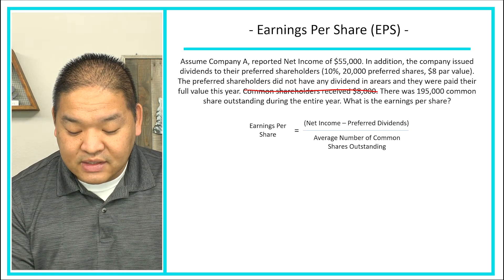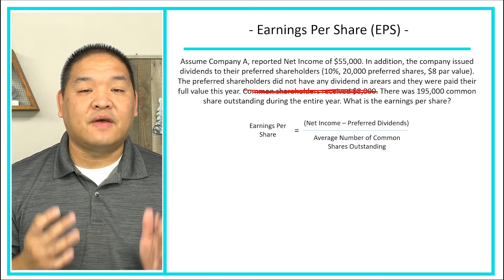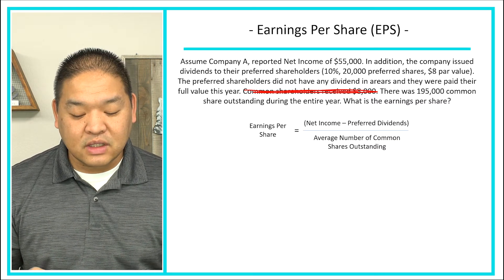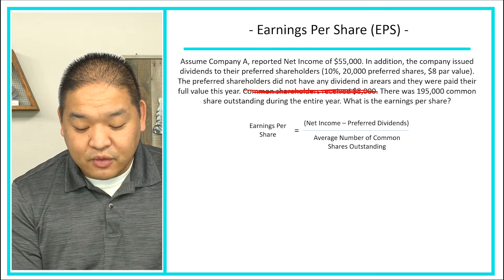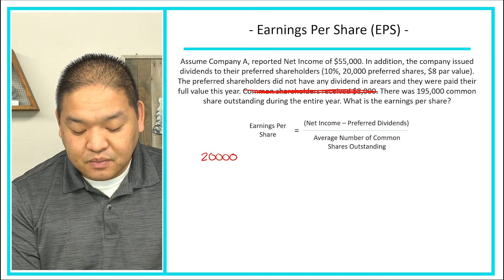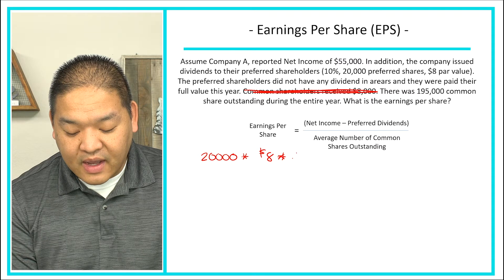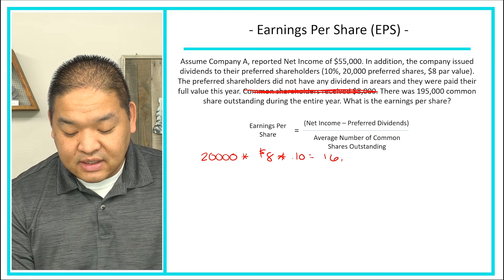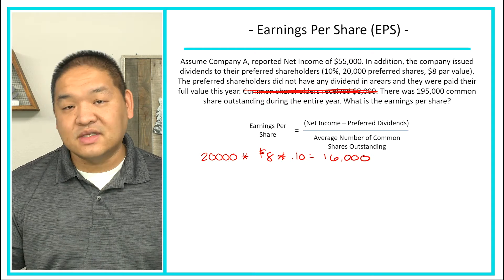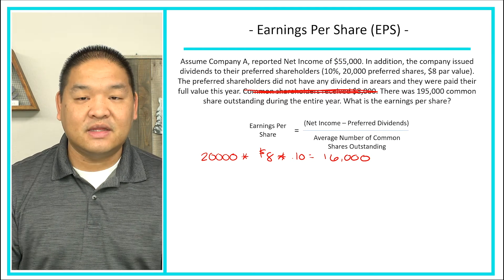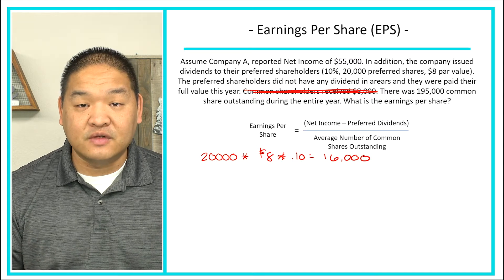We don't actually need the $8,000 paid to common shareholders — that's extra information, because common dividends have nothing to do with calculating EPS. The first step is to calculate the preferred dividend. We do this the same way as in the preferred dividend lesson: take 20,000 shares, multiply by $8 par value, then multiply by 10%. That gives us $16,000 in preferred dividends.